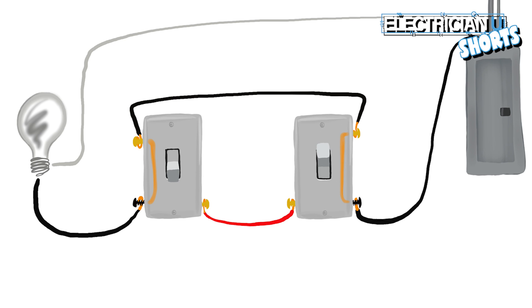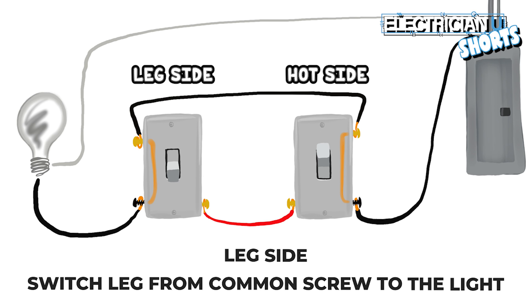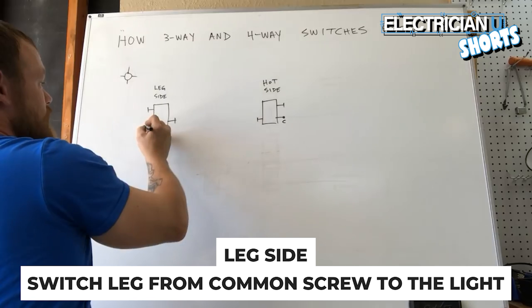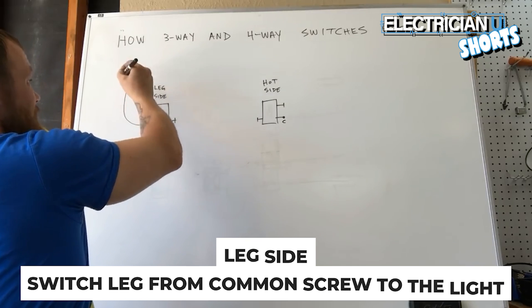So how a three-way works is we've got a hot side and we got a leg side. The leg side is where you're going to have your switch leg which is a wire that goes from the device up to the actual light itself.